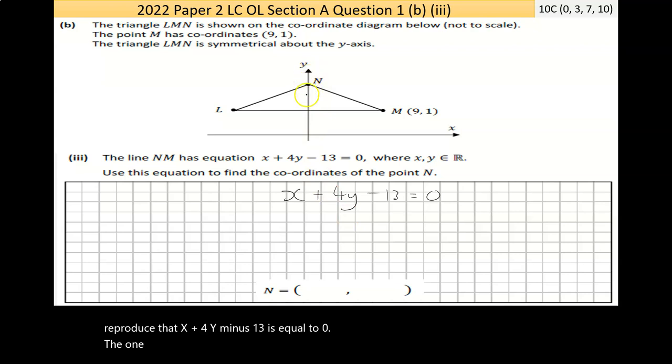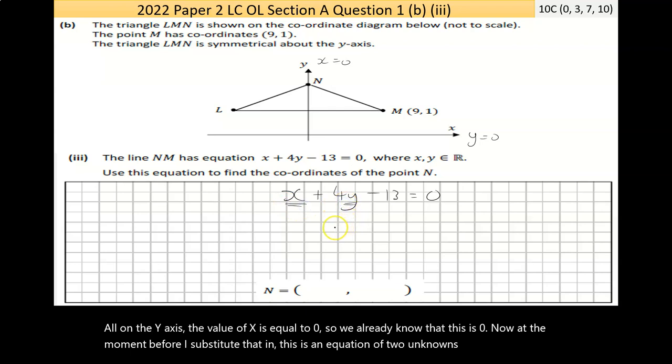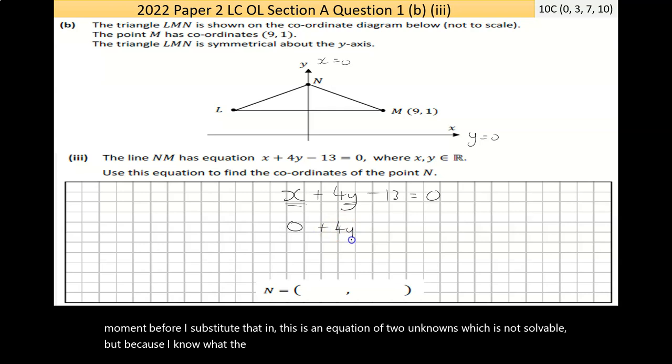So, let's reproduce that. x plus 4y minus 13 is equal to 0. Now, one thing that's always special, all along the x-axis, the value of y is equal to 0. All on the y-axis, the value of x is equal to 0. So, we already know that this is 0. At the moment, before I substitute that in, this is an equation of two unknowns, which is not solvable. But because I know what the x-values are, I now have an equation of one unknown.